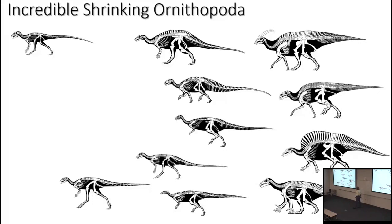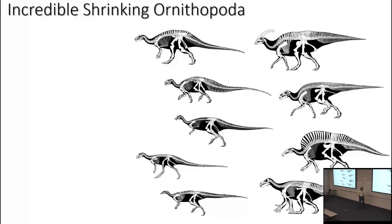By the dawn of the 21st century, we began to recognize that heterodontosaurids weren't ornithopods either. For a long time they were still included even in early cladistic studies, because there are many skull similarities between heterodontosaurids and true ornithopods — but those turn out to be convergences. We also began recognizing a handful of ornithischians closer to ornithopods and marginocephalians than to anything else, but outside both of those groups.